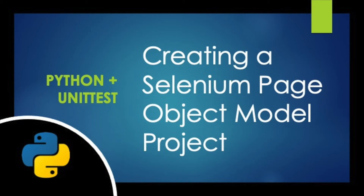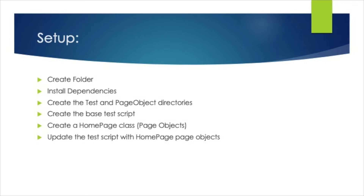Hello and welcome to the QA Underground. In today's video we're going to be talking about how to create a Selenium page object model using Python and unit tests. Before we get started we'll go over the setup. Today we will create a new test project, install the dependencies, create the test and page object directories, create the base test script, create a home page class which is our page objects, and finally update the test script with the home page objects.